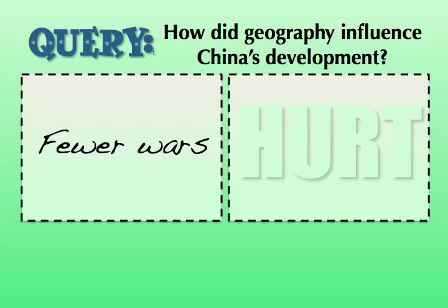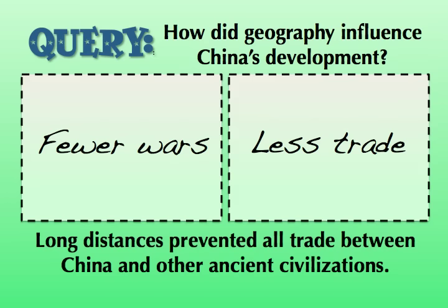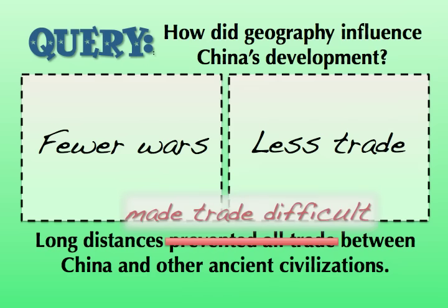But how might we see some negative effects coming out of these natural barriers? Probably something along the lines of there would be less trade. If it's difficult for armies to come in and out, it's going to be difficult for merchants to come in and out too. Is it reasonable to say that long distances prevented all trade between China and other ancient civilizations? Of course not — it's not going to prevent all trade. But what we might say is it's going to make trade more difficult. It's going to be difficult for merchants to bring goods and for ideas to travel in and out of China as a result of these natural barriers.